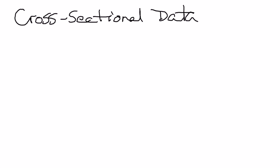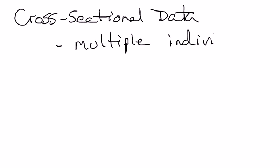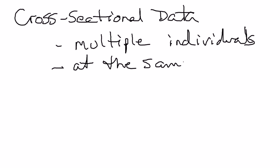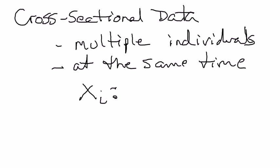Cross-sectional data means you're going to observe multiple individuals at a point in time, or at the same time. For example, suppose X is the starting salary for college graduates. I'm going to represent that data with X for starting salary and I for individual, where the individual could be 1 to 400 if we're talking about recent college graduates.